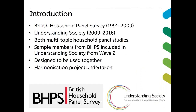The British Household Panel Survey started in 1991. There are 18 waves taking us up to 2009. It's a research resource which looks at behavioural, social and economic changes in households and individuals across this period. This was then followed up with Understanding Society, which has a slightly wider range of topics covered and a much larger sample — approximately 40,000 households — making it one of the largest surveys of its type in the world.